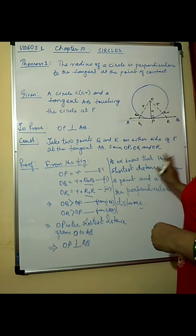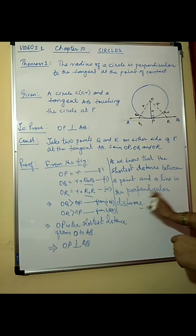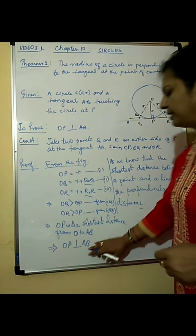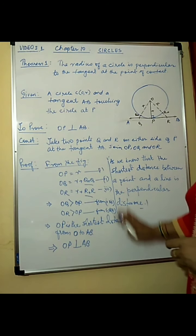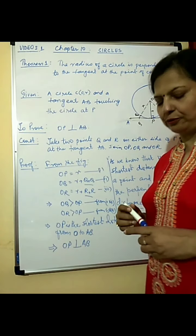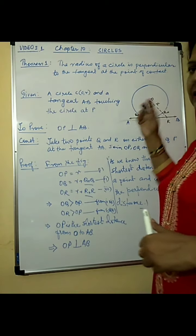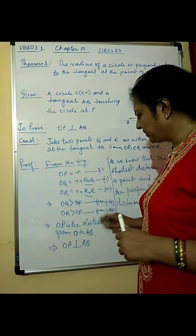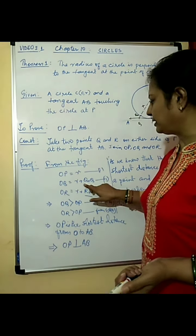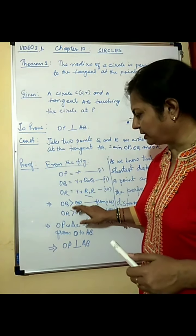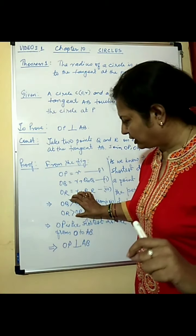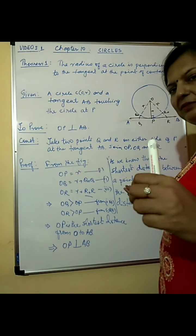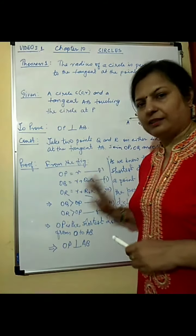The reason is: the shortest distance between a point and a line is the perpendicular distance. The theorem carries 4 marks. Given and figure together comprise 2 marks; the two key equations each give half a mark, making one mark total; the result gives half a mark, and the reasoning gives another half a mark. That is how the 4 marks are distributed. This is theorem number 1.